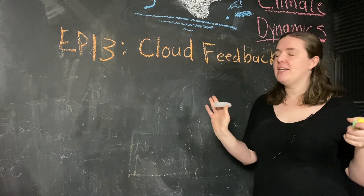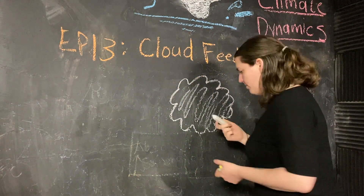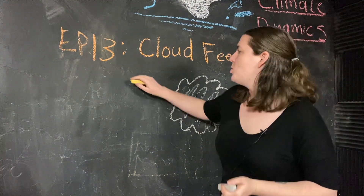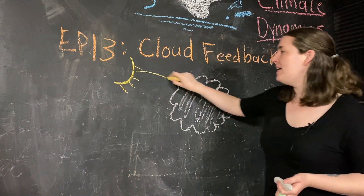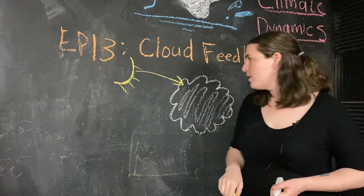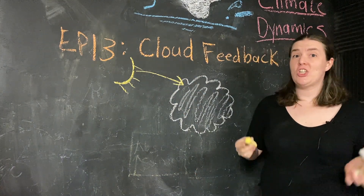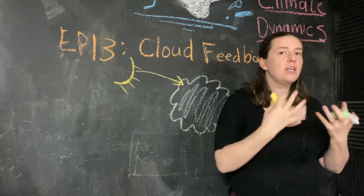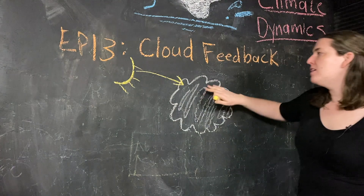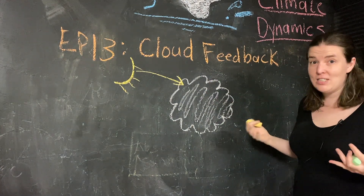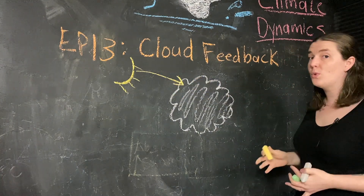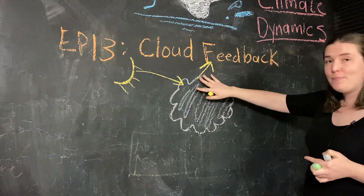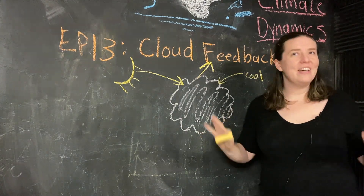So let's start by channeling our best Bob Ross and draw a happy little cloud. What is this cloud going to do with incoming solar radiation? We have our sun over here, sunlight coming in — it's going to hit the top of the cloud. Clouds, like ice, are very shiny. White and light-colored things tend to reflect light away, while black and dark-colored things tend to absorb that light. So the cloud top is going to reflect this incoming shortwave solar radiation back to space, which means the cloud top tends to be cool.